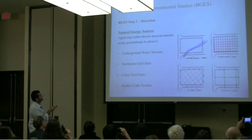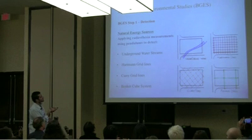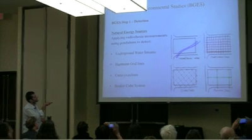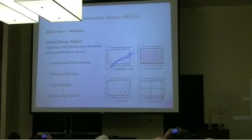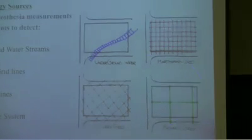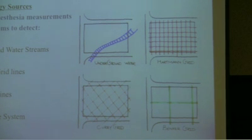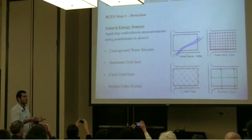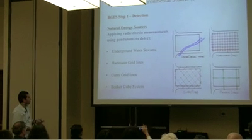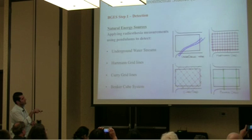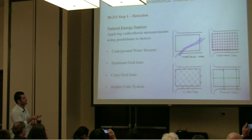The first step is detection of natural energy sources. If we have a site to study, I need to detect underground waters, the Hartman grid, the Gary grid, and the Banker grid. These are the four major energy grids that need to be detected. There are others known by different geologists — if detected, that would be a plus. Detection is done through practicing radiesthesia.